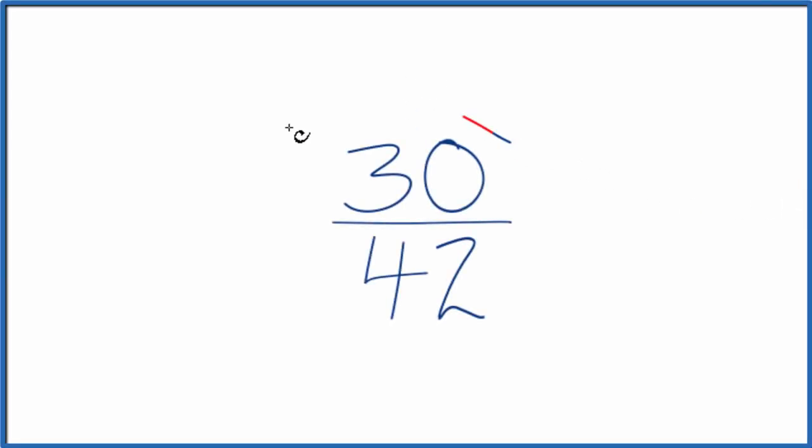Let's simplify the fraction 30 over 42. And to do that, what we want to do is find another fraction that's equivalent, equal to 30 over 42. They have the same decimal value, just that we've simplified or reduced 30 over 42 down to its lowest terms.